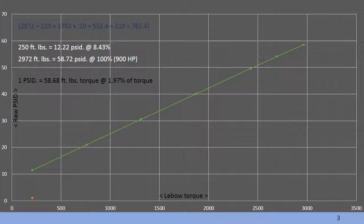When we did this plot and entered the chart, we determined that 12.22 PSI at 250 foot-pounds of torque, which is also 8.43% on aircraft with percent of torque indicators. And we got 58.72 PSI at 2972 foot-pounds, which is 100% on percentage indicators.